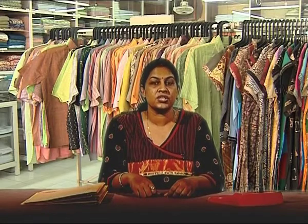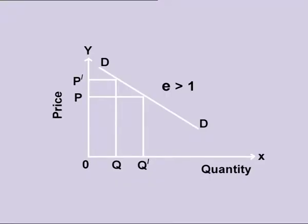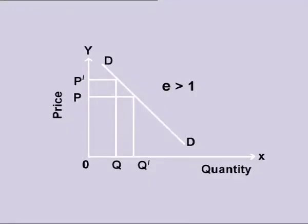Elastic Demand: when the percentage change in quantity demanded is more than the percentage change in its price, such a demand is termed as elastic — also called more elastic or relatively elastic demand. From the diagram in the visual, one can see that QQ' is greater than PP', which shows that change in demand is greater than change in price. Inelastic Demand: when the percentage change in quantity demanded is less than the percentage change in price, such a demand is termed as inelastic — also called less elastic or relatively inelastic demand. In the diagram, QQ' is less than PP', which shows that change in demand is less than change in price.